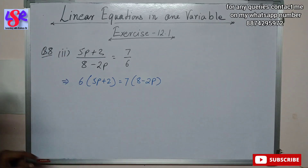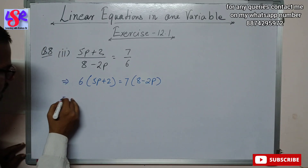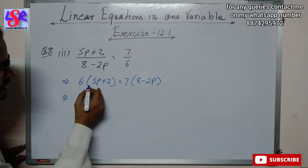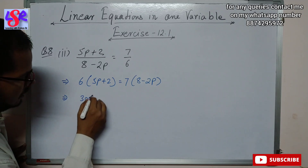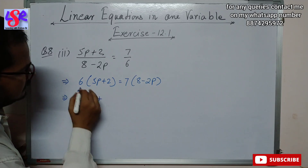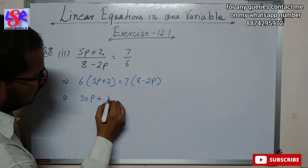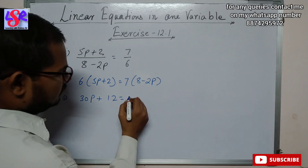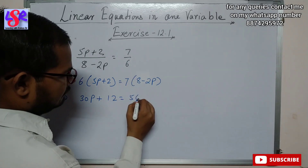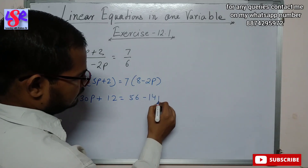Opening the bracket: 6 × 5 = 30p, plus 6 × 2 = 12, equals 7 × 8 = 56, minus 14p.